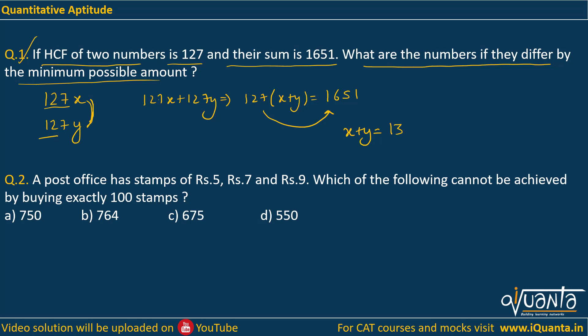Now only one condition has to be kept in mind: the numbers should differ by minimum possible amount. So that means the value of x and y must be as close as possible, because one number is 127x, another number is 127y. The difference has to be minimum. 127 is common, so only difference would be created due to these x and y. So x and y should be as close as possible. So what can be the values of x and y? It will be 6 and 7, these are the closest values.